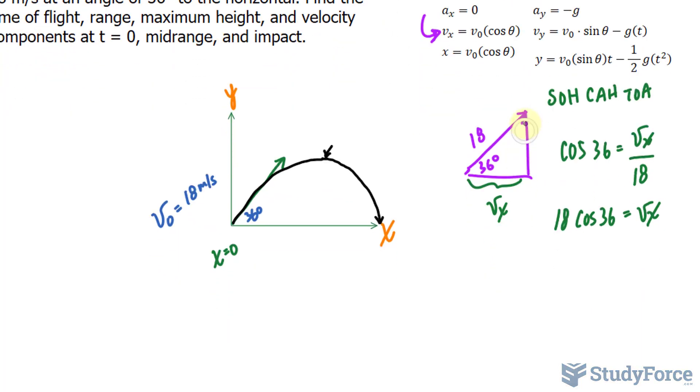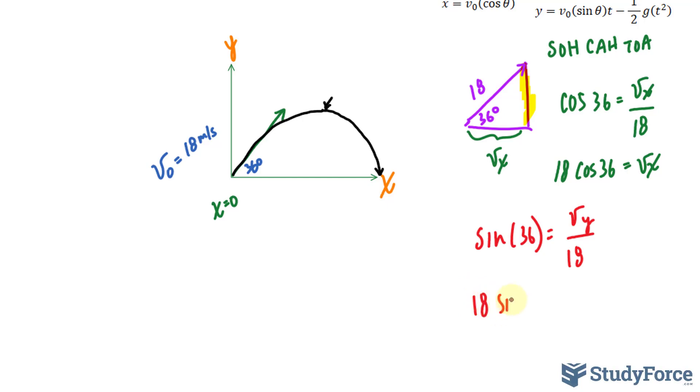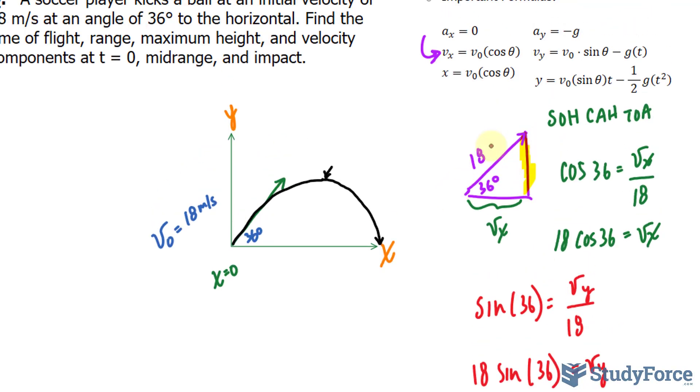The y component we can find using sine. So if we are looking for this part, we will use sine. We have sin(36) = vᵧ/18. Rearranging for vᵧ, we get 18 sin(36) = vᵧ.